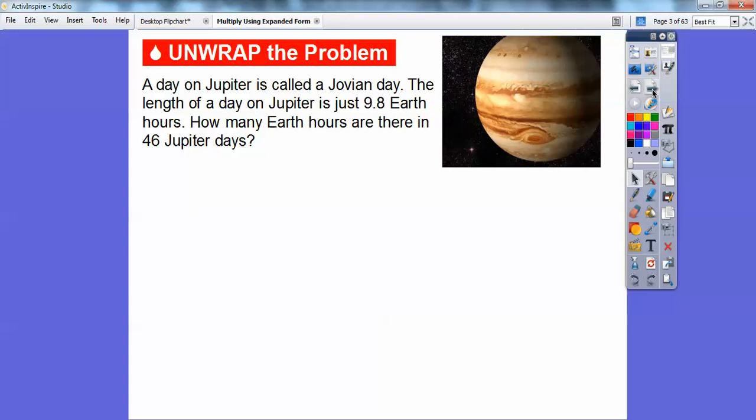So here's one. A day on Jupiter is called a Jovian day. The length of a day on Jupiter is just 9.8 Earth hours. That's interesting, isn't it? So how many Earth hours are there in 46 Jupiter days? What we're going to do is multiply 46 times 9.8.